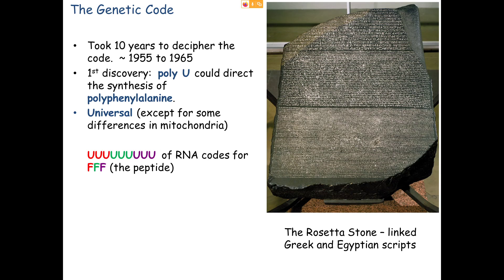Let's start with the simplest assumption, which we know is wrong but it's a good place to start. How about one base — let's say uracil, since it's most unique to RNA — directs the synthesis of one amino acid? Starting in 1955, they found if you make a string of RNA that is entirely uracil — poly-U — you always get the same protein: phenylalanine after phenylalanine after phenylalanine. So the first assumption is: uracil means phenylalanine goes in.